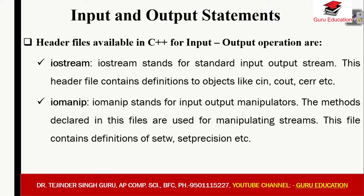Next, let's look at the header files available in C++ for input/output operations. First of all, iostream — which stands for standard input output stream. This is a header file that contains definitions for objects like cin, cout, and cerr.